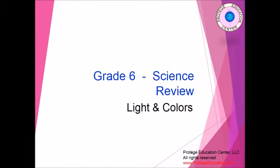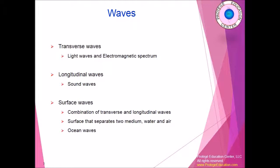Now, information about grade 6 science: light and colors. This is not an extensive review, but this will give you some basic information for students to review before the class. The first topic is waves. In light and colors, it's important to know the variations between the waves: transverse waves, longitudinal waves, and surface waves. Transverse waves are what people generally talk about when they discuss light waves and the electromagnetic spectrum.